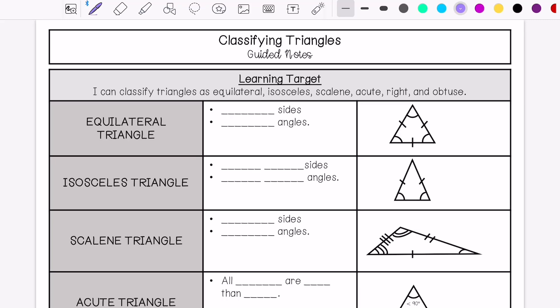My learning target is I can classify triangles as equilateral, isosceles, scalene, acute, right, and obtuse. We will classify triangles by their angles and also by their side lengths.